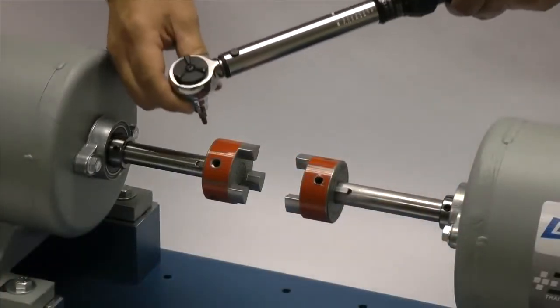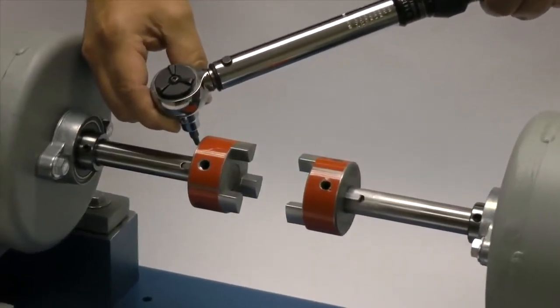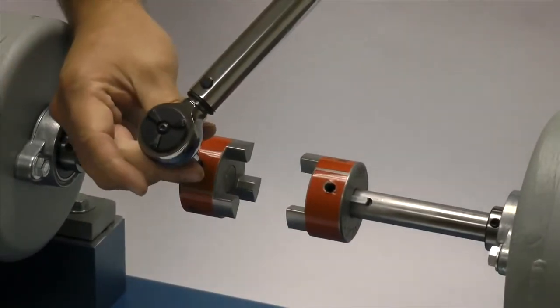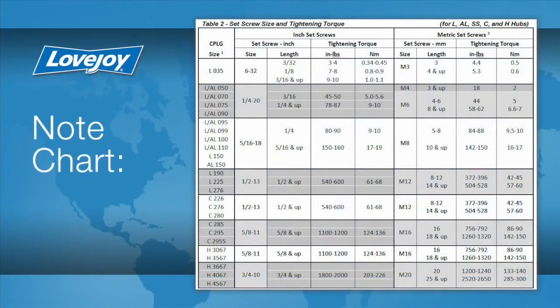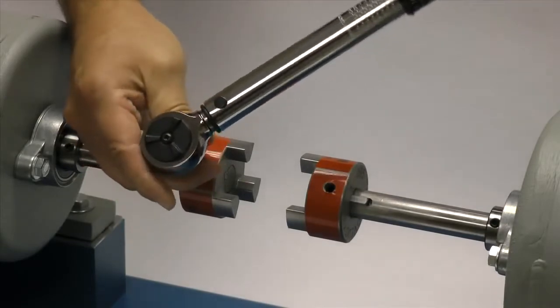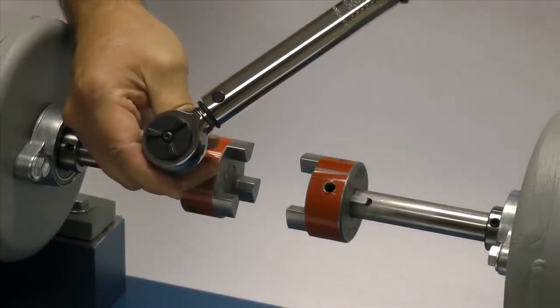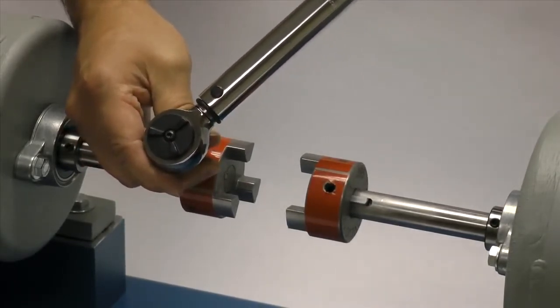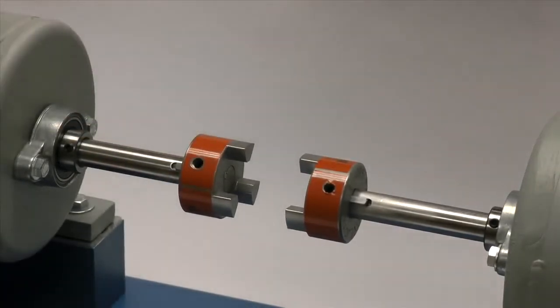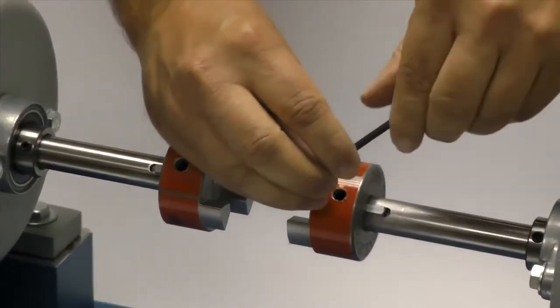The set screws should be tightened to the recommended torque settings using a calibrated torque wrench. The use of a torque wrench is important. If the set screws are not tightened properly, the hub could work loose and slide on the shaft. If the set screws are too tight, they could damage the key, the shaft, or the hub. We will tighten the set screw in one hub to the required torque and the second we will lightly tighten to allow for a minor adjustment after the equipment is moved into place.